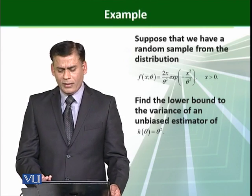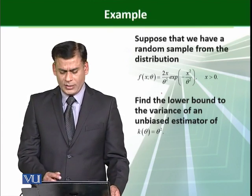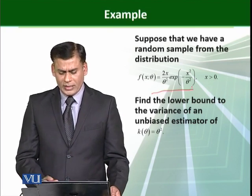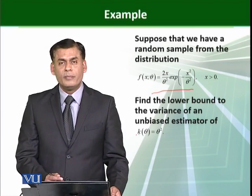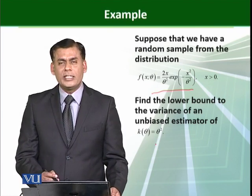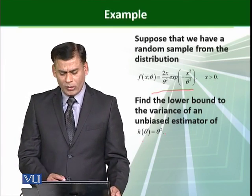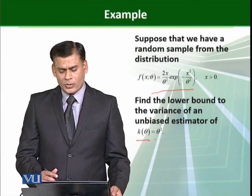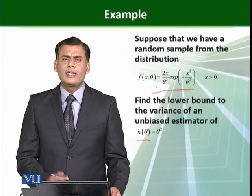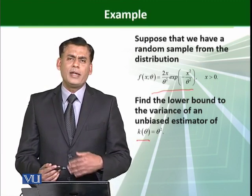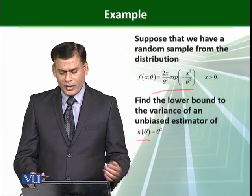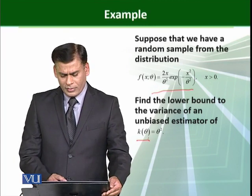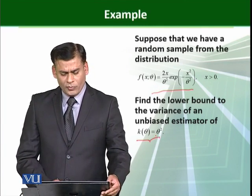Suppose that we have a random variable whose distribution function is given on the screen. Now find the lower bound of the variance of an unbiased estimator of k of theta that is equal to theta squared. We are interested to find the lower bound of an estimator which equals theta square. If you recall, this distribution is basically the Rayleigh distribution. So we will find out the lower bound of the variance for theta squared.